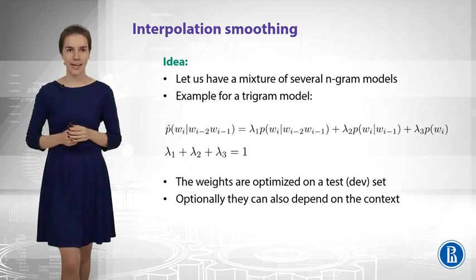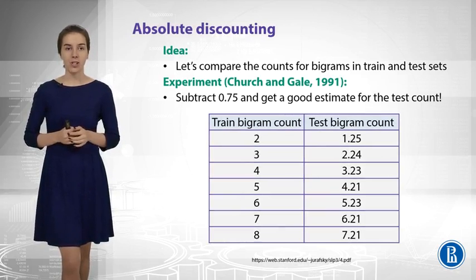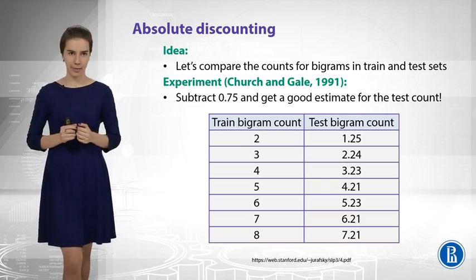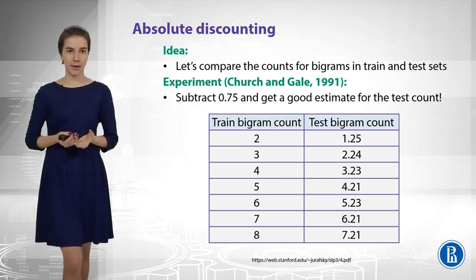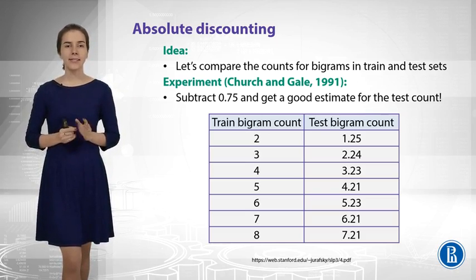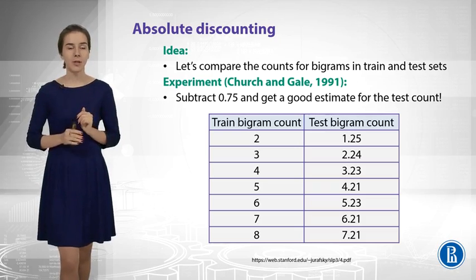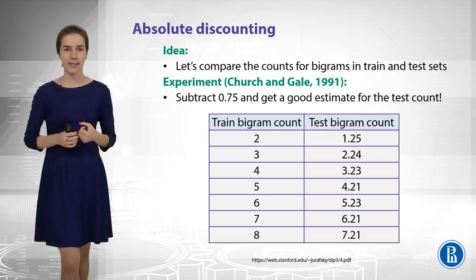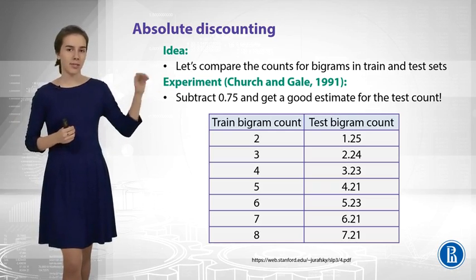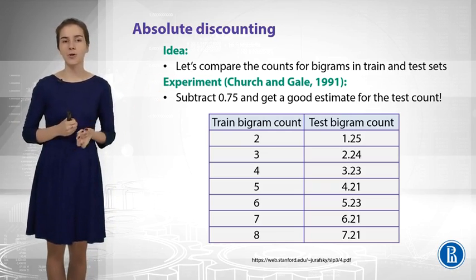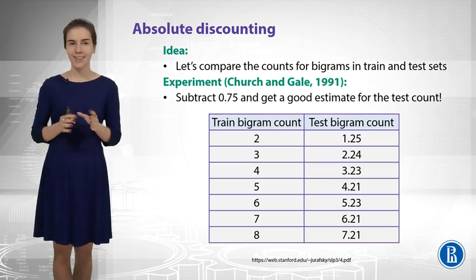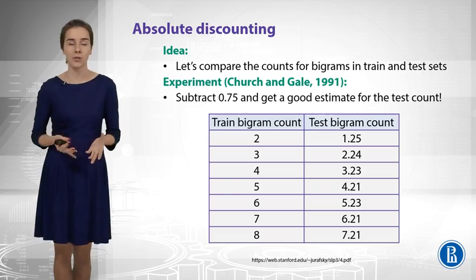We are doing great and we have just two methods left. The first one is called absolute discounting. To recap, the motivation for all our methods is to pull the probability mass from frequent n-grams to infrequent n-grams. To what extent should we pull this probability mass? The answer can be given by a nice experiment from 1991. If you count the number of bigrams in your training data and then count the average number of the same bigrams in the test data, those numbers are really correlated. You can see that if you just subtract 0.75 from your training data counts, you will get very good estimates for your test data. This is a little bit magical property of language that we can try to use.